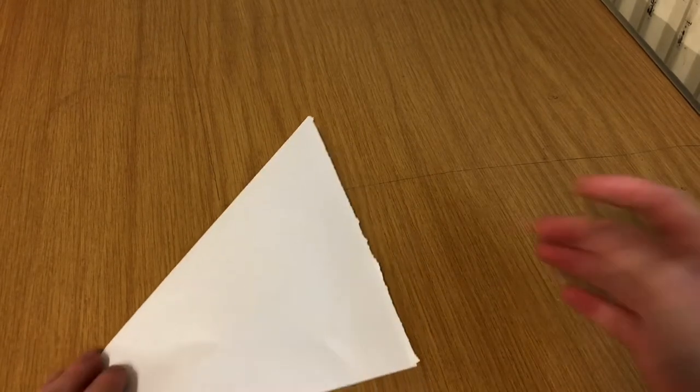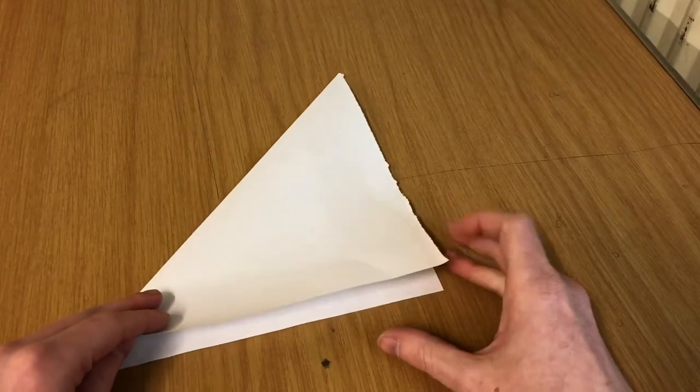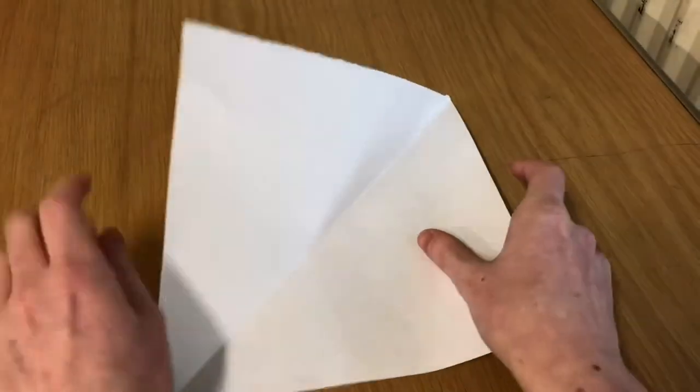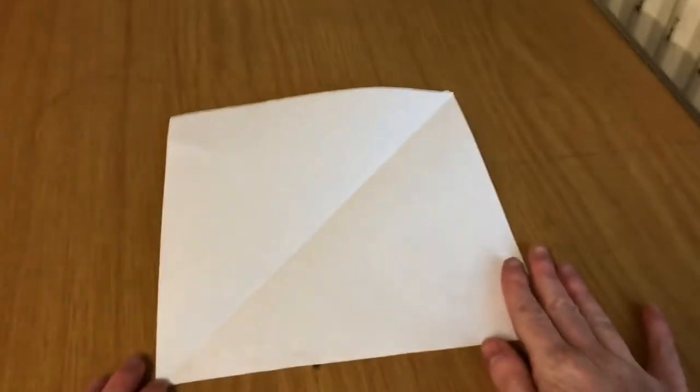Now you should have a triangle. Unfold it and it makes a lovely square piece of paper.